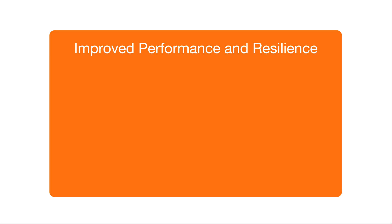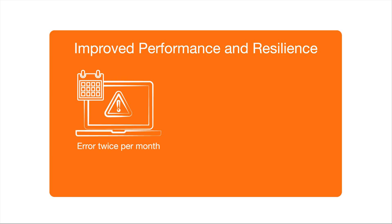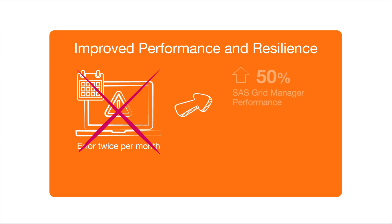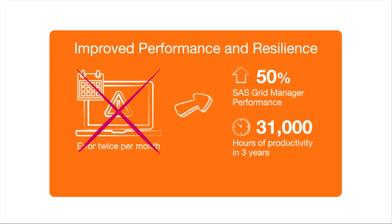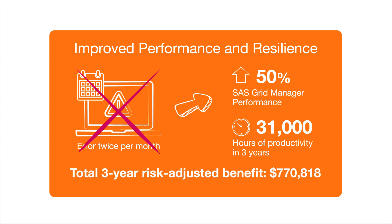The customer improved its analytics and reporting performance and resilience. At least twice per month, a process would be interrupted due to user error by using the wrong scheduler, and the process would be stopped due to OS updates. These would need to be manually restarted without checkpoints. The customer estimates a 50% performance improvement and reduction in incidents, equating to approximately over 31,000 hours of productivity over three years. The value of this benefit over three years is $771,000.